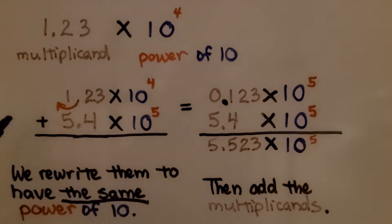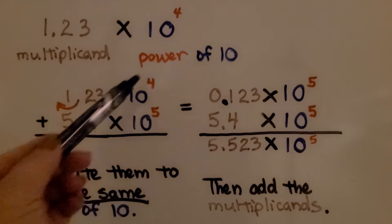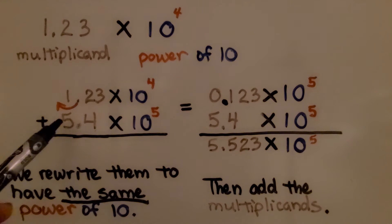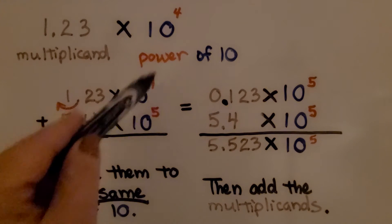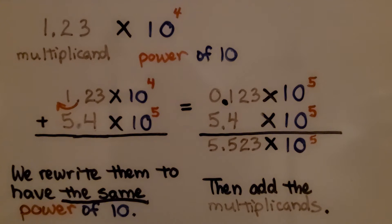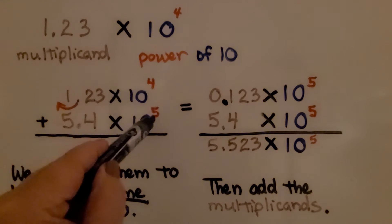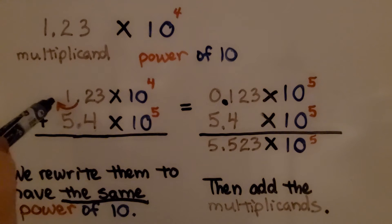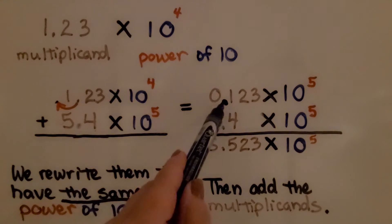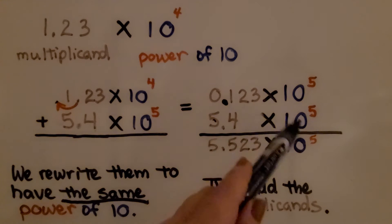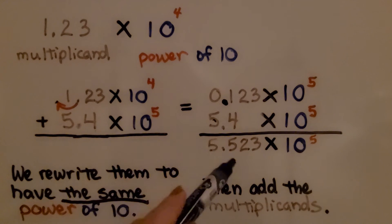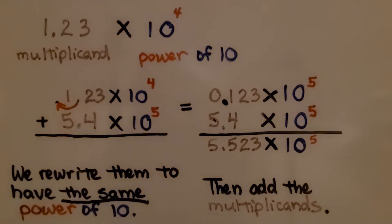If we need to add 1.23 times 10 to the fourth power to 5.4 times 10 to the fifth power, we need to change them to be the same power. We change the 4 to a 5 by moving the decimal point one place to the left, giving us 0.123 times 10 to the fifth power plus 5.4 times 10 to the fifth power. We add them and get 5.523 times 10 to the fifth power.